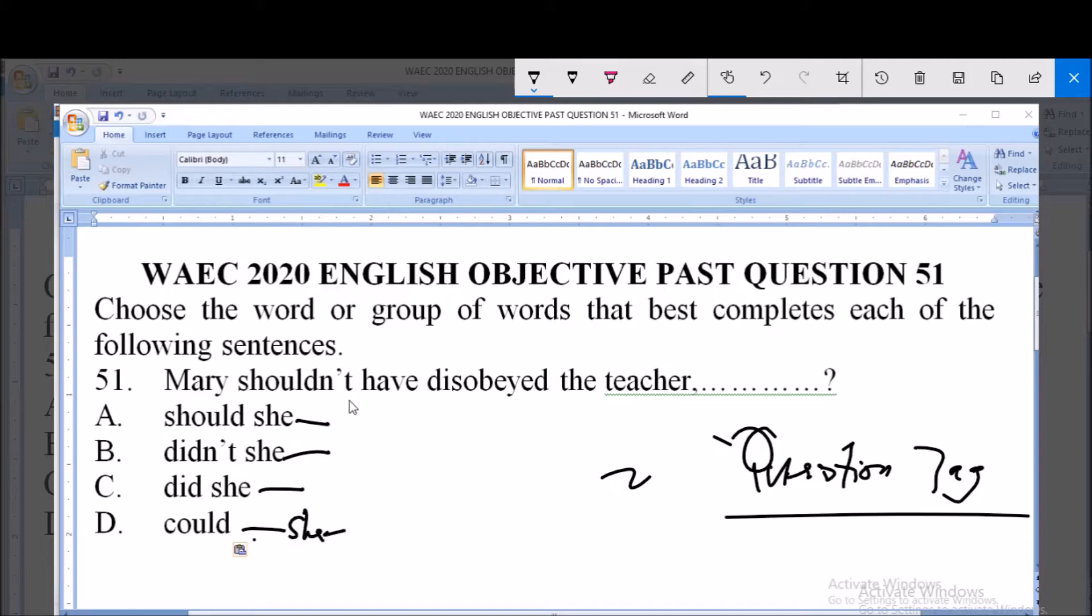Looking at this statement, Mary shouldn't have disobeyed the teacher. The expression is should not, which is negative. We need a positive tag for this negative expression.